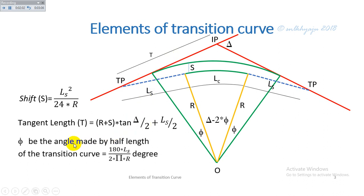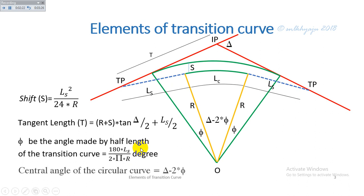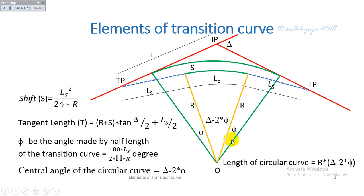Phi_beta is the angle made by the half length of the transition curve, measured from tangent point T1 to the beginning of the circular curve, and is given as: phi_beta = 180 × L_S / (2πR) degrees. The central angle of the circular curve is delta minus 2 phi. The length of the circular curve is given by R × (delta − 2 phi), where (delta − 2 phi) is in radians.